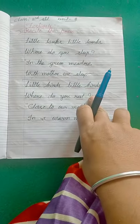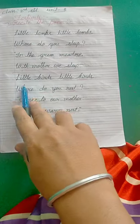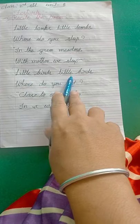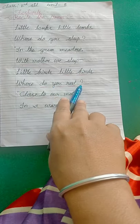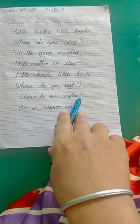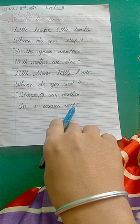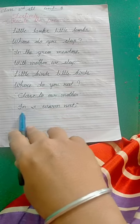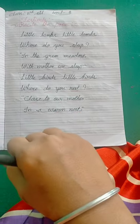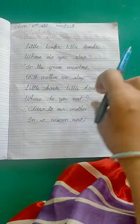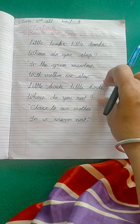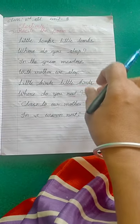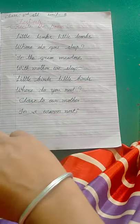Now come to the second para. Little birds, little birds, where do you rest? Close to our mother in a warm nest. Dear students, you have to learn two lines and also learn the spellings of these words, okay.